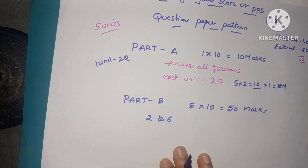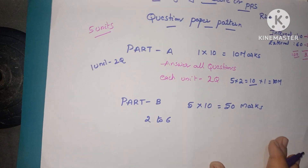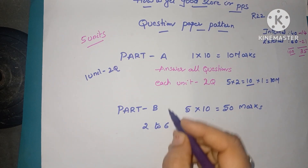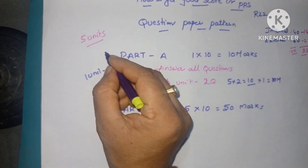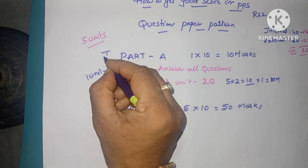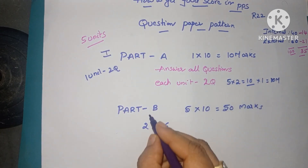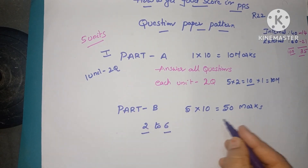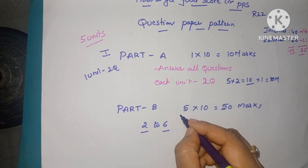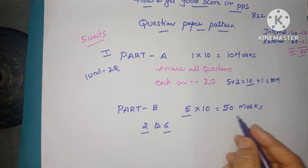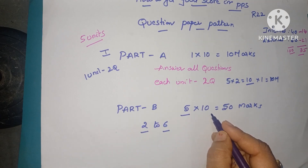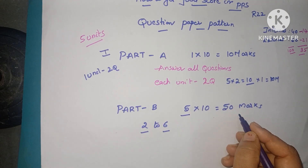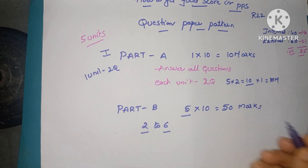In Part B, internal choice is there. Part B covers question numbers 2 to 6 — totally 5 questions — and each question carries 10 marks. So 5 into 10 equals 50 marks.